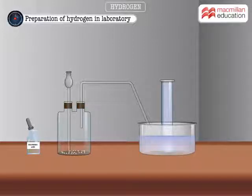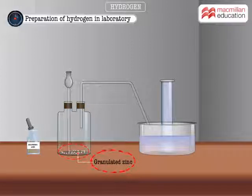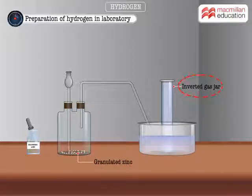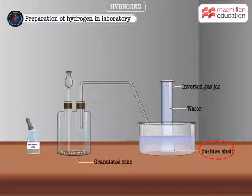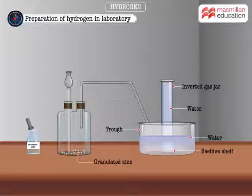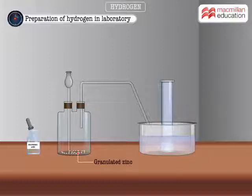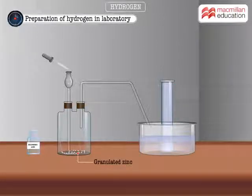Here's the apparatus ready for the experiment. We have a few pieces of granulated zinc taken in the bottle. A gas jar containing water is inverted over a beehive shelf placed in a trough containing water. The apparatus is airtight. We pour dilute sulphuric acid through the thistle funnel until it covers the zinc pieces.